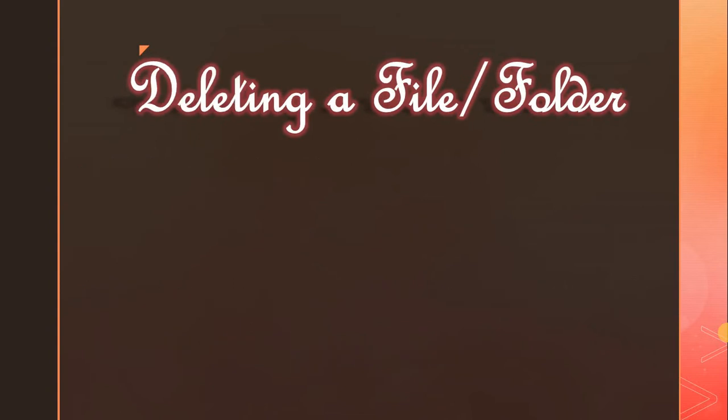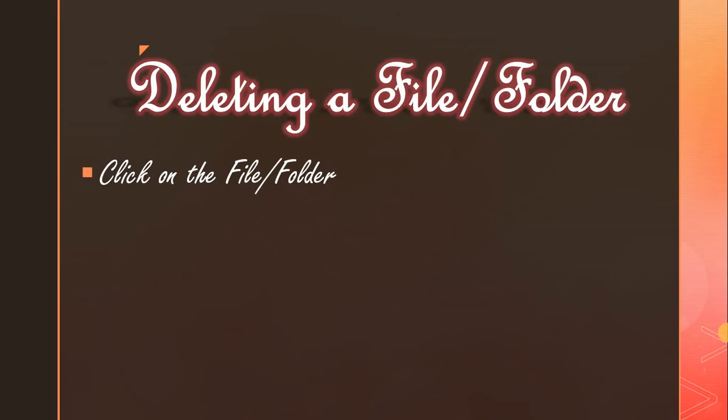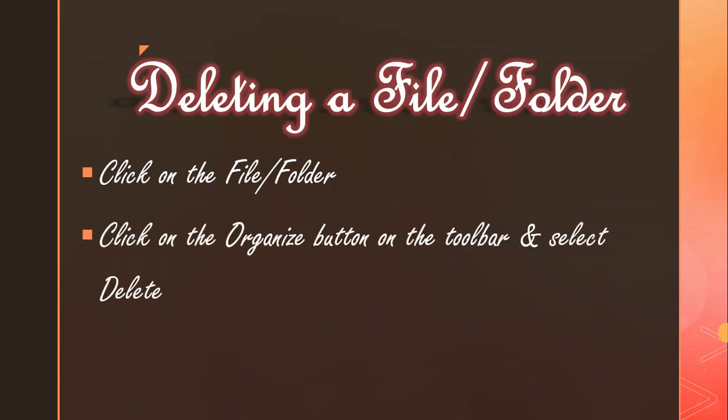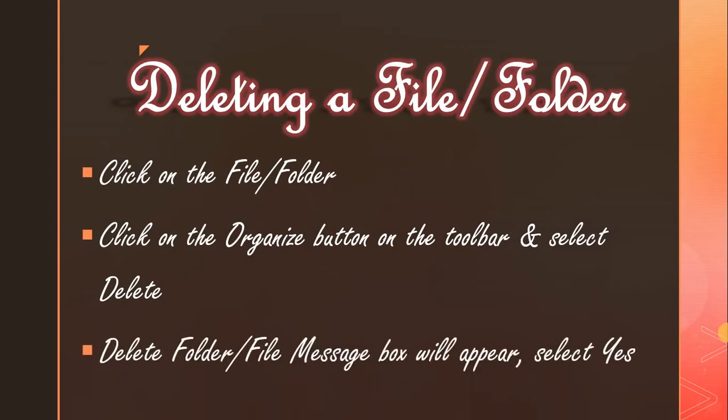Next, deleting a file or folder. First, select the file or folder that you want to delete, then click on the Organize button and select Delete from the drop-down menu. A Delete Folder or Delete File message box will appear. Click Yes to delete. Another way is by right clicking on the file or folder and selecting Delete from the short menu. It also shows the Delete Folder or Delete File message box. Click Yes to confirm.